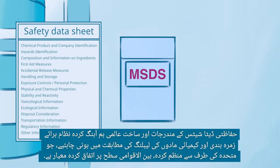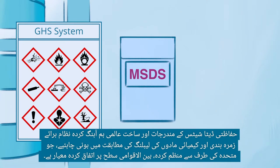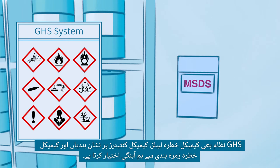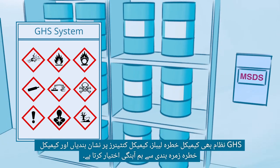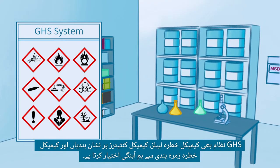The content and structure of Safety Data Sheets should be in line with the Globally Harmonized System of Classification and Labeling of Chemicals, which is an internationally agreed-upon standard managed by the United Nations. The GHS system also harmonizes the use of chemical hazard labels, markings for chemical containers, and the chemical hazard classification.